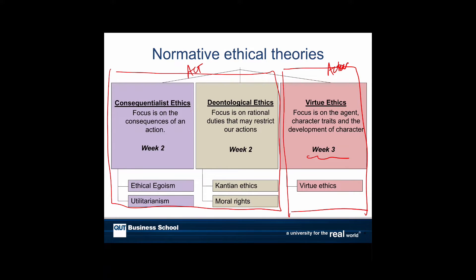What binds together the consequentialist and deontological ethical approaches is visible in this diagram. Two of the approaches — ethical egoism and utilitarianism — focus on the consequences of the action. That's how we judge the act, based upon its impact or what happens as a result. The deontological approach focuses more on how or what you do — judging whether what you're doing is ethical, not the result. So we look at Kantian ethics and its extension, moral rights, to think about that.